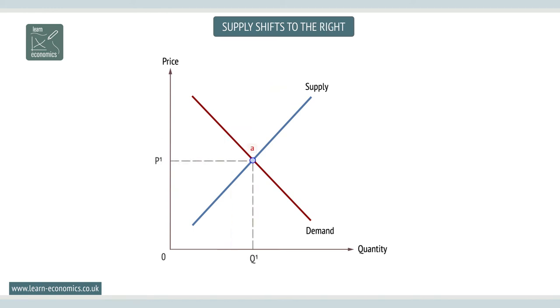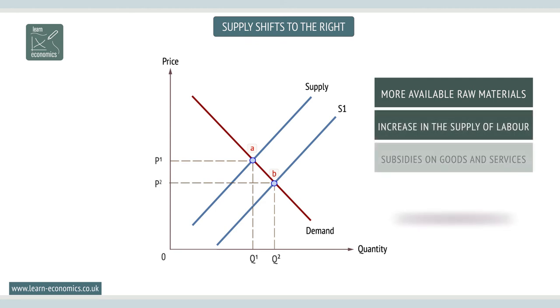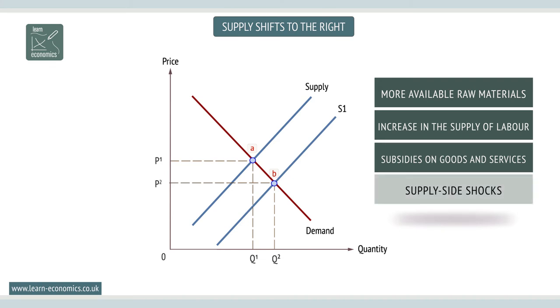A shift to the right is an increase in supply. Assuming price is constant, a shift in supply to the right could be caused by more available raw materials, an increase in the supply of labor, subsidies on goods or services, a reduction in taxes, or unusually good weather or other beneficial supply factors.